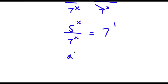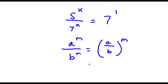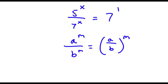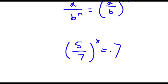Now if I have something in the form a to the power of m over b to the power of m, this is the same thing as a over b to the power of m. So 5 to the power of x over 7 to the power of x is going to equal 5 over 7 to the power of x, and this is equal to 7.